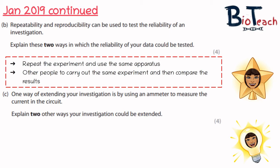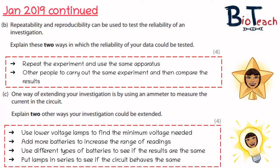Part C of question three said one way of extending the investigation is by using an ammeter to measure the current in the circuit, then asked you to explain two other ways the investigation could be extended. For this experiment, you could use lower voltage lamps to find the minimum voltage needed, add more batteries to increase the range of readings, use different types of batteries to see if the results are the same, or put the lamps in a series circuit instead of parallel to see if the circuit behaves differently.